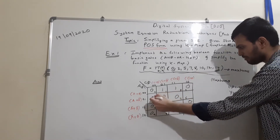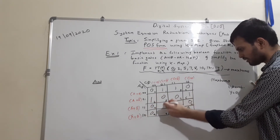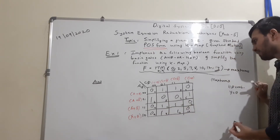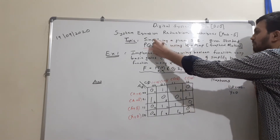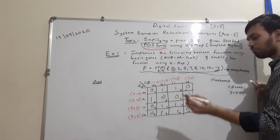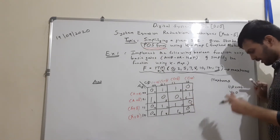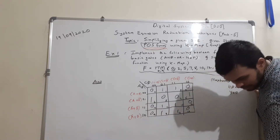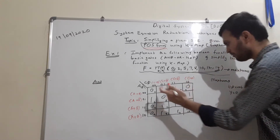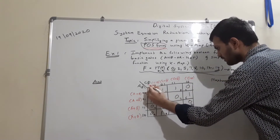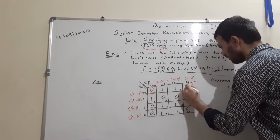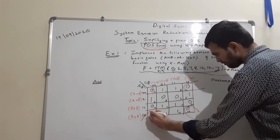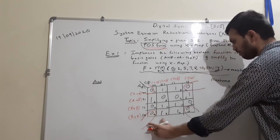We have filled the remaining cells with 1. One important thing to note: since we want the expression in standard POS form, we will group together the max terms — the 0s. Using different color markings for clarity, these four corner elements form a quad of max terms.